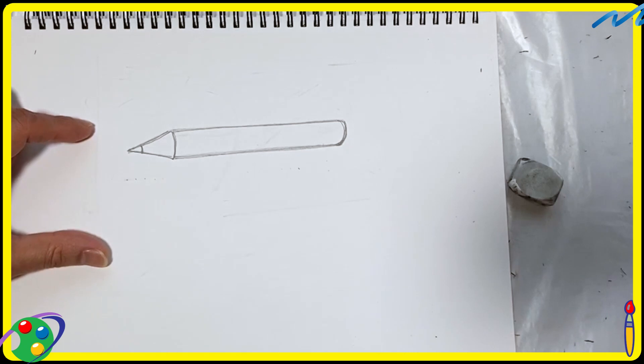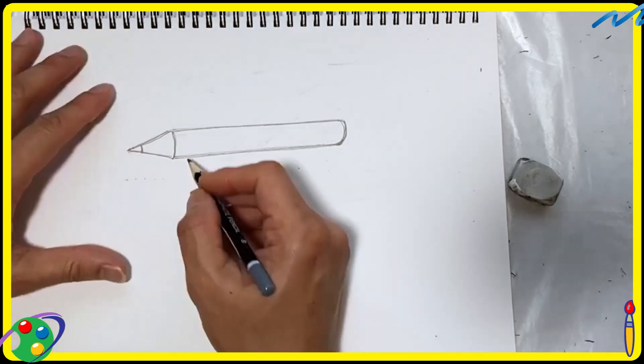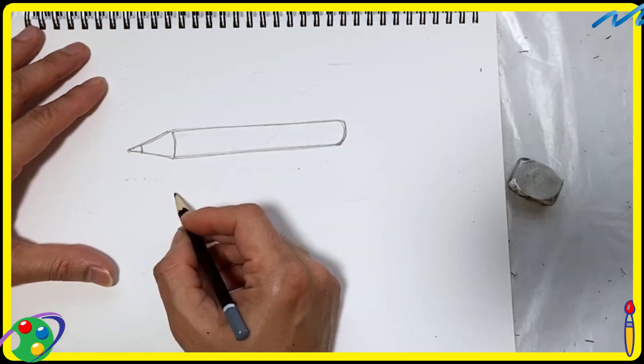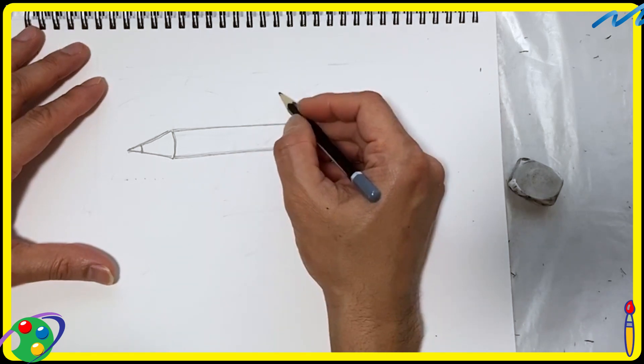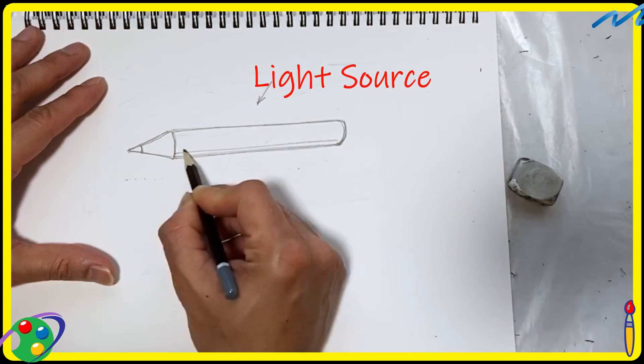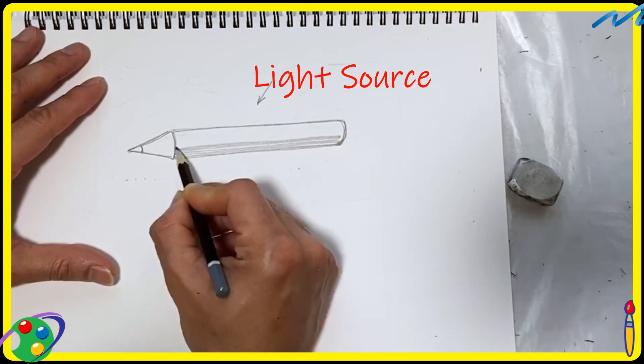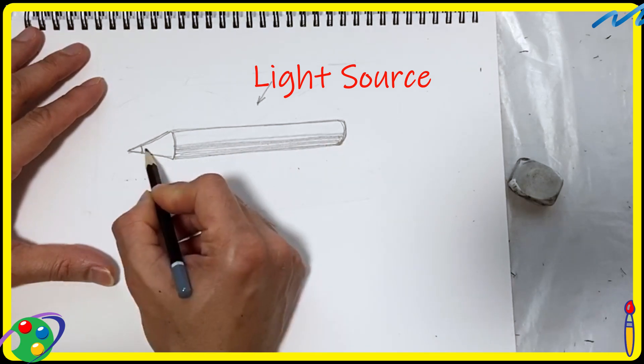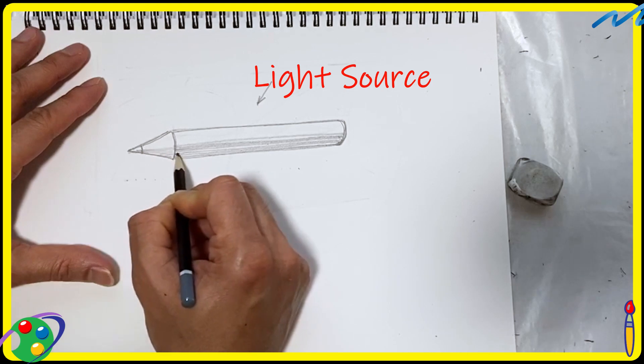Imagine the line is coming from the top. Now if we add a few lines on the lower part of the pencil, it clearly conveys which direction the light is coming from. So you can see we can do many things using just lines.